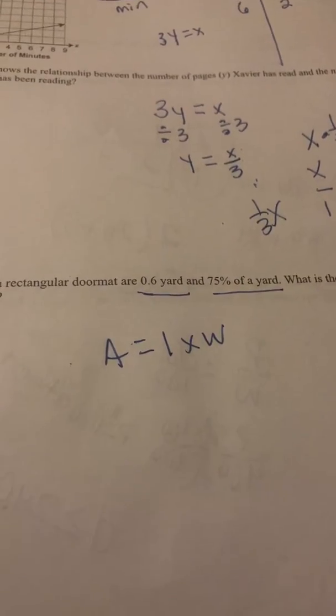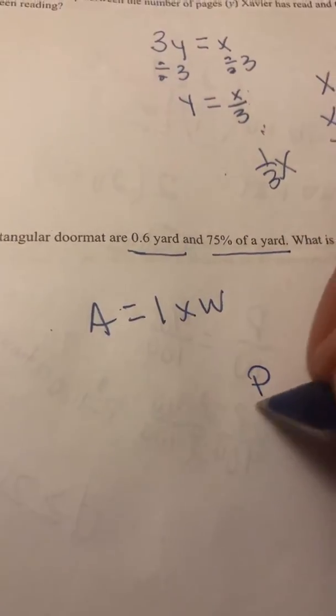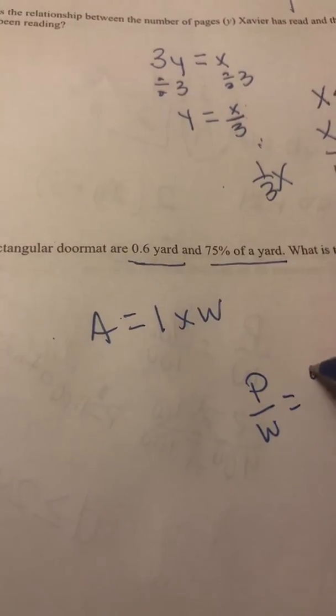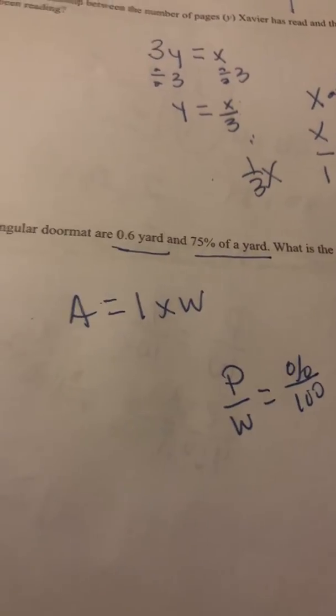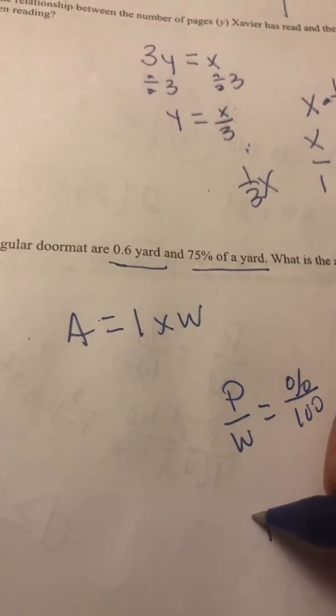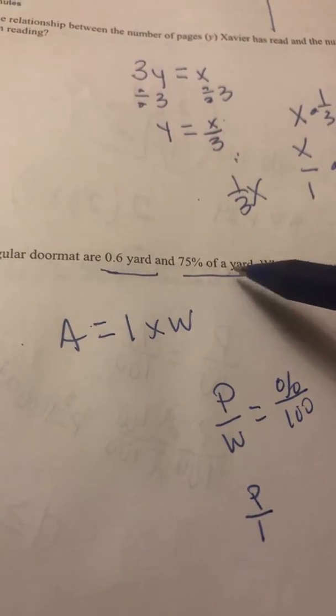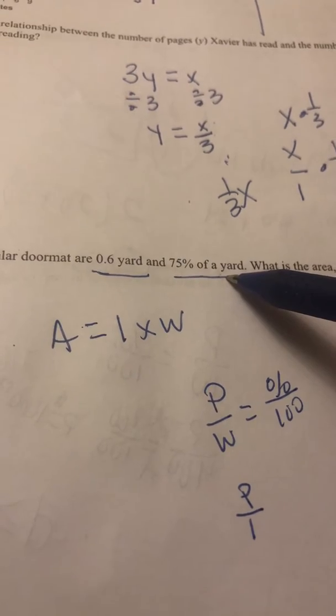In order to do so, I am going to use part over whole equals percent over 100. So a whole here would be one yard. Okay, I need the part of that because you know that 75% of a yard isn't quite a yard, right?